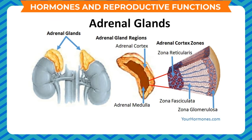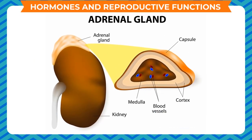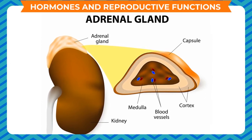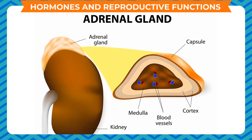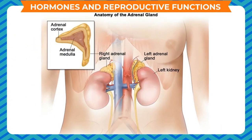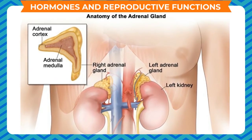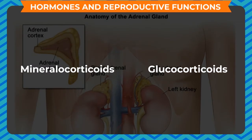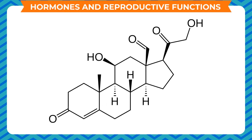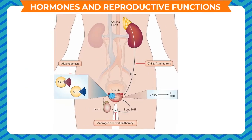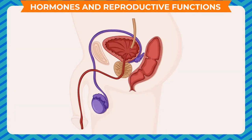The adrenal glands lie at the superior poles of the two kidneys and are each composed of two prominent parts: the adrenal medulla and the adrenal cortex. The adrenal medulla is functionally related to the sympathetic nervous system and is a source of the hormones adrenaline and noradrenaline in response to sympathetic stimulation. The adrenal cortex secretes corticosteroids: mineralocorticoids, which regulate electrolytes of the body fluid particularly sodium and potassium, and glucocorticoids, which have an important role in increasing blood glucose concentration. Small amounts of sex hormones, specially androgenic hormones, are also secreted.